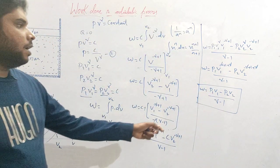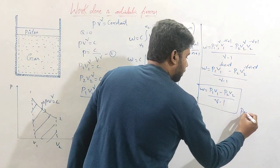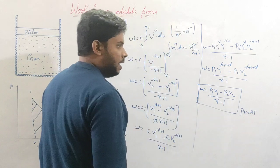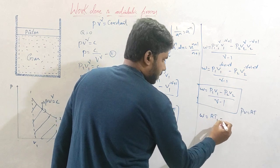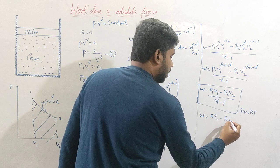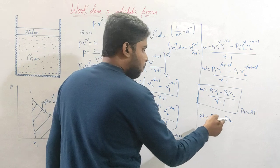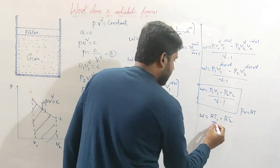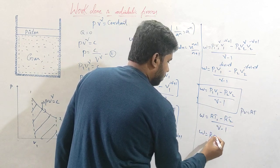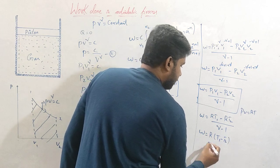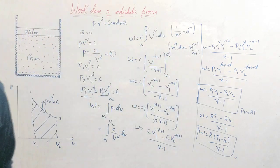We can also write another form using the ideal gas equation pV = RT. For state one, p1 V1 = RT1, and for state two, p2 V2 = RT2, since R is the gas constant and has the same value in both cases. Taking R common, the work done becomes W = R(T1 − T2) / (γ−1). This is the work done in the adiabatic process. Thank you.